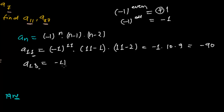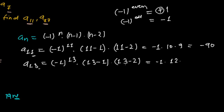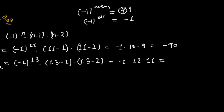For a13: replace n by 13, giving (-1)^13 × (13-1) × (13-2). Since 13 is odd, (-1)^13 = -1. So it's -1 × 12 × 11. Minus 1 times 12 is -12, times 11 gives -132. So a13 = -132.